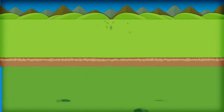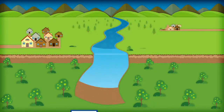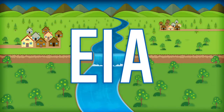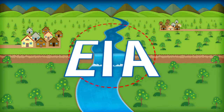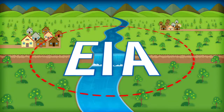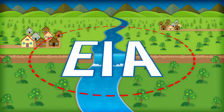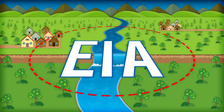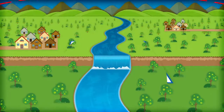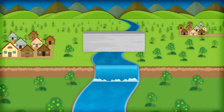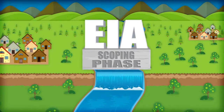The quality of an EIA depends largely on the proper identification of the environmental and social aspects that may be subject to direct and indirect impacts from the proposed activity or project. A clearly defined project scope is the basis of an adequate EIA.